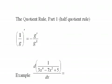The quotient rule part one, the half quotient rule. I call this the half quotient rule because it's merely one over some function, and this prime of course means taking the derivative of one over g of x. The rule says this equals negative g prime over g squared.